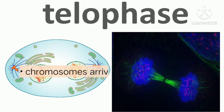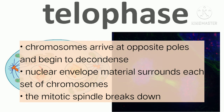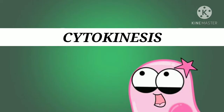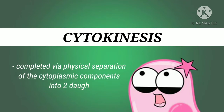During telophase, the chromosomes reach the opposite poles and begin to decondense, relaxing into a chromatin configuration. The mitotic spindles are depolymerized into tubulin monomers that will be used to assemble cytoskeletal components for each daughter cell. Nuclear envelopes form around the chromosomes and nucleosomes appear within the nuclear area. Cytokinesis is the second main stage of the mitotic phase, during which cell division is completed via the physical separation of cytoplasmic components into two daughter cells. Division is not complete until the cell components have been apportioned and completely separated, and the process of cytokinesis differs for eukaryotes with cell walls, such as plant cells.